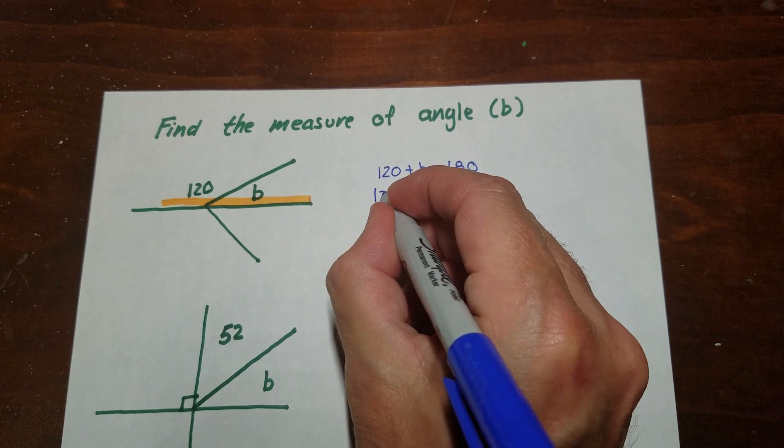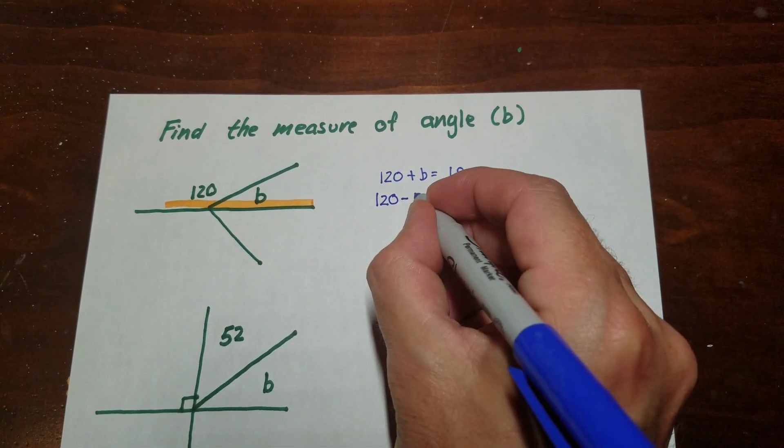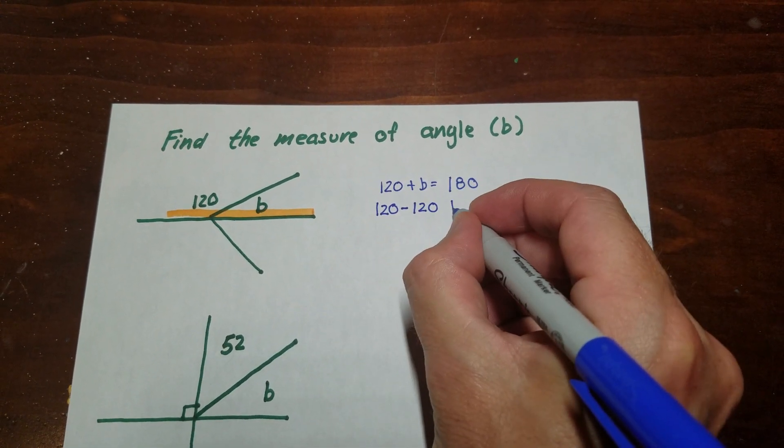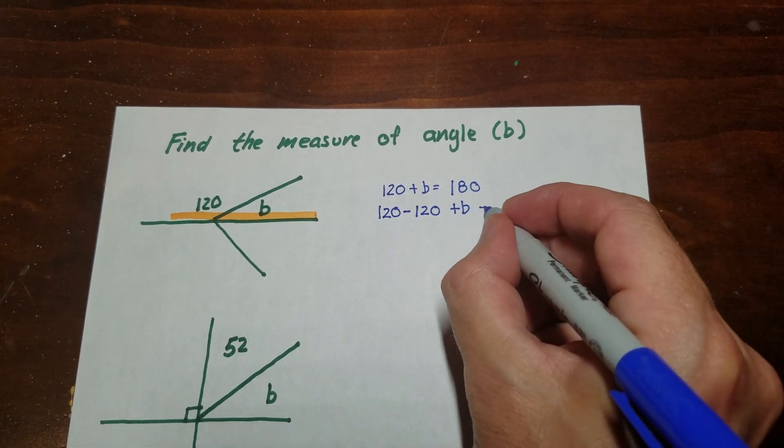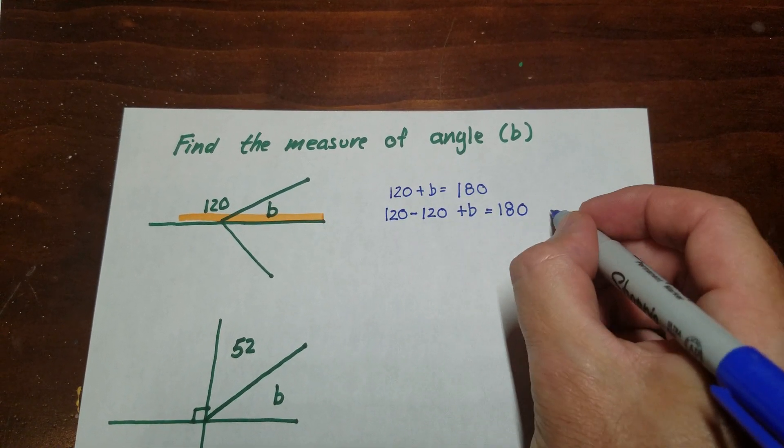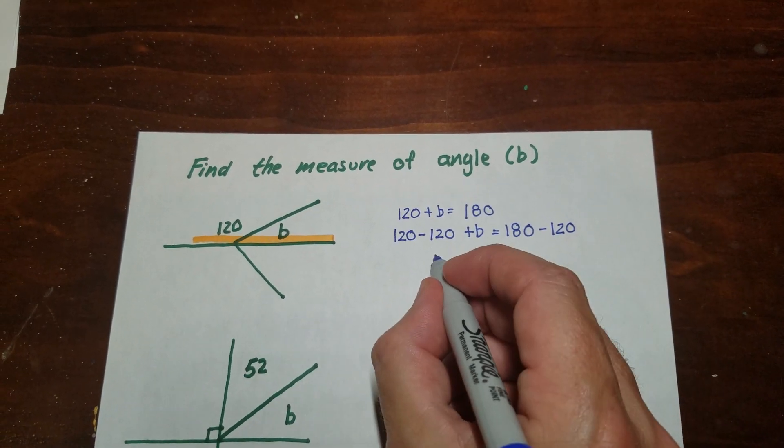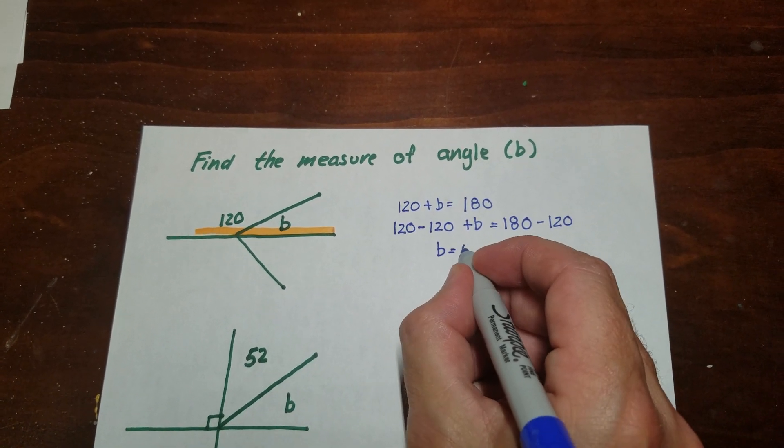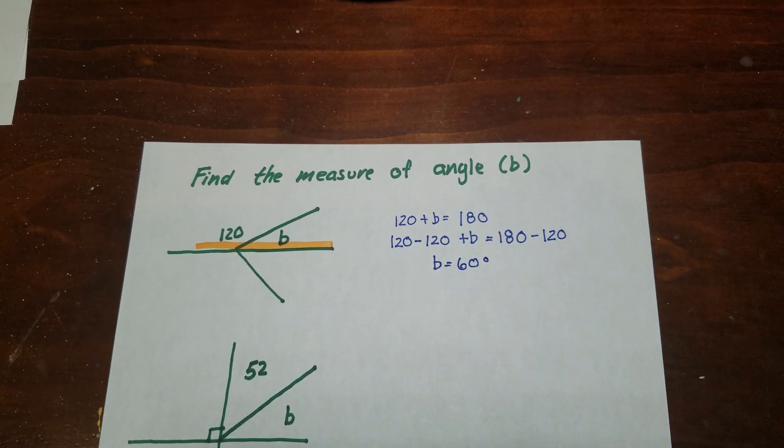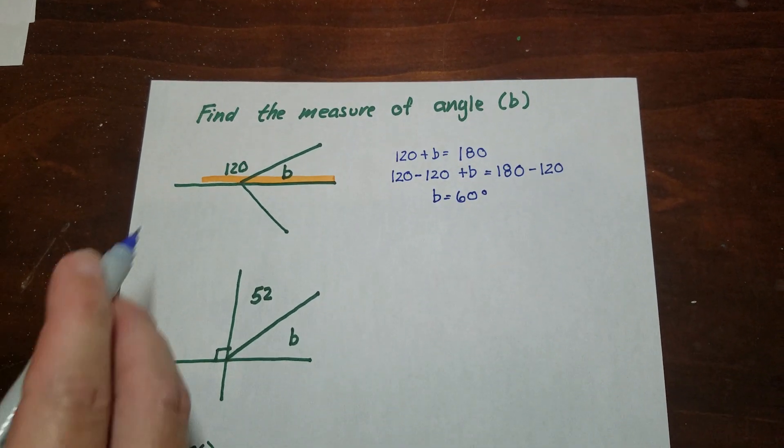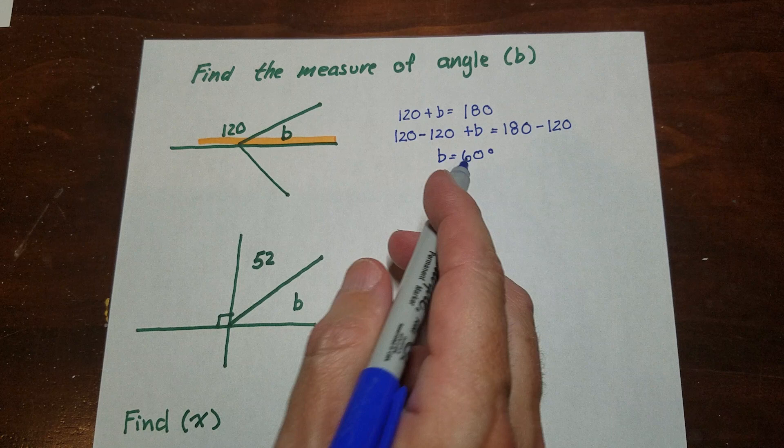And then I'm just going to do what's called the subtraction property of equality. So when you subtract, you call it the subtraction property of equality. If you add, you call it the addition property of equality. So now I have B is equal to 60 degrees. And that's it. That's all there is to it. You use a relationship to set up the equation. You solve the equation. You find B.